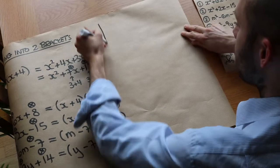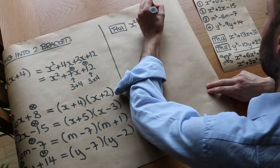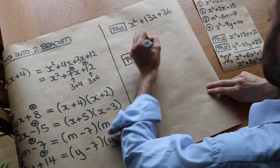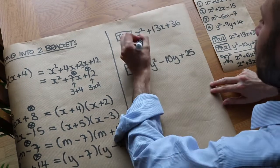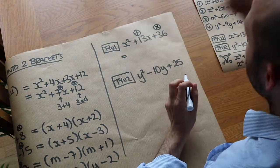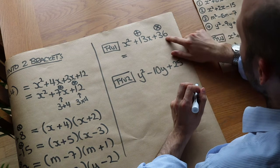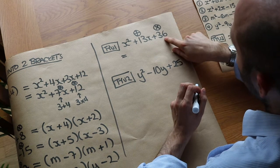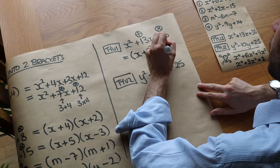Now for test questions. First: x squared plus 13x plus 36. Both numbers will be positive. What multiplies to give 36 and adds to give 13? 12 and 3 don't add to 13. 6 and 6 don't either. But 9 and 4 multiply to give 36 and add to give 13. So the factorisation is (x + 9)(x + 4).